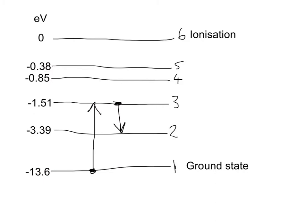By the principle of conservation of energy, this atom has now lost energy, and that energy has to go somewhere. What actually happens is the electron loses energy and produces a photon of light — represented as a little wiggly wave — that goes whizzing off out of the atom. That photon of light has an energy E equals hf.